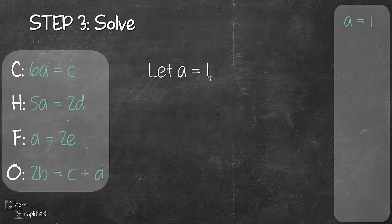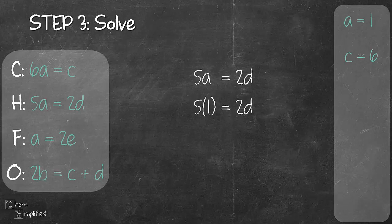We'll start with the first equation: 6A equals C. So after substituting in 1 for A, we get C equals 6. So now we know the value of A and C. Let's continue with the second equation: 5A equals 2D. Let's substitute in 1 for A. So we have 5 times 1 equals 2D, and that gives us D equals 5 over 2. Even though 5 over 2 is a fraction, let's not worry about it right now.